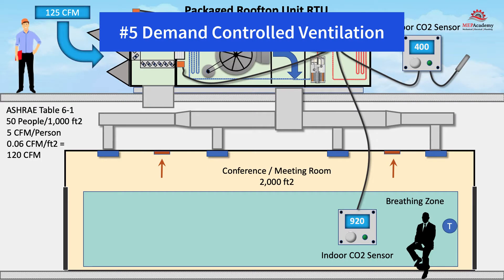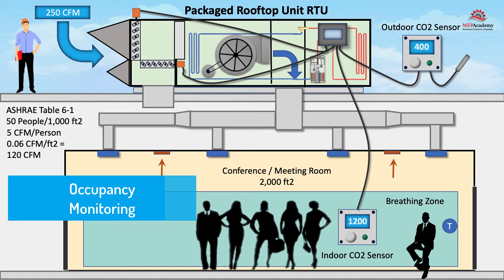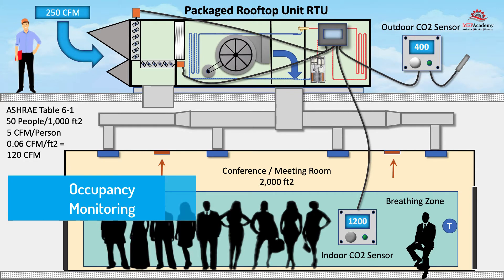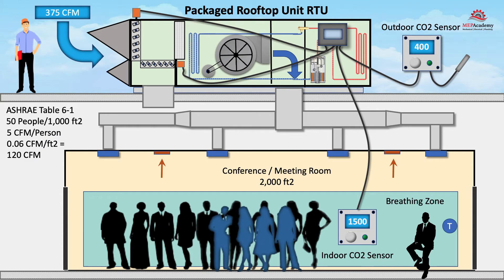Number five: Demand Control Ventilation. It's called demand controlled ventilation because it controls the amount of ventilation based on the demand, which changes with occupancy levels. Some form of occupancy monitoring will be used as the control strategy. Ventilation air is required by ASHRAE Standard 62.1, but providing ventilation air is energy intensive and costly. Providing only what's needed can save on energy and money.